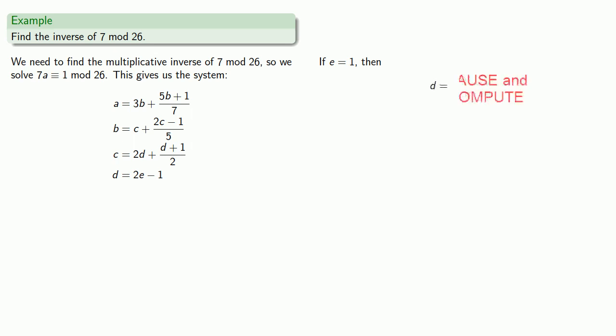So if e equals 1, then d is 1. If d is equal to 1, then c is 3. If c is equal to 3, then b is 4. If b is equal to 4, then a is 15. And so the multiplicative inverse of 7 mod 26 is equal to 15.